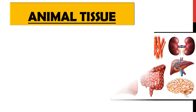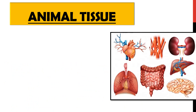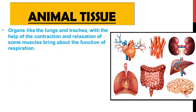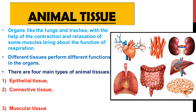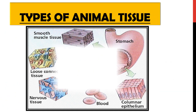In the body of an animal, different organs come together to perform specific functions. On screen you can observe the heart, kidney, lungs, intestine, liver, and brain. Different organs perform different functions with proper coordination. Organs like the lungs and trachea — the windpipe — use contraction and relaxation of muscles for respiration. According to their functions, tissues are classified into four main types of animal tissue: epithelial tissue, connective tissue, muscular tissue, and nervous tissue.